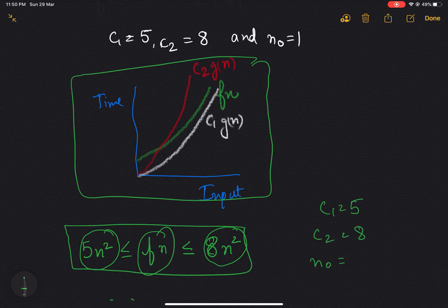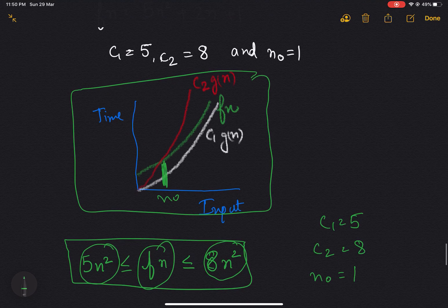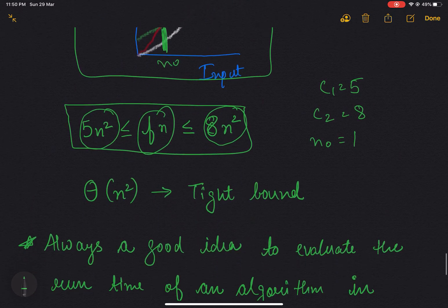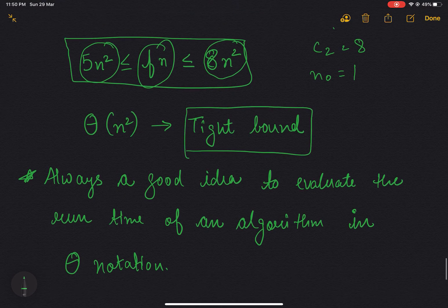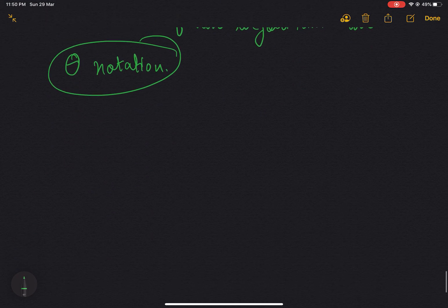After n₀, we can see that c2·g(n) is always greater than f(n) and c1·g(n) is always less than f(n). So we can say that Theta(n²) is the tight bound of our algorithm. It's always a good idea to evaluate the runtime of an algorithm in Theta notation. That's all about this topic, guys — thank you.